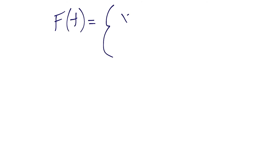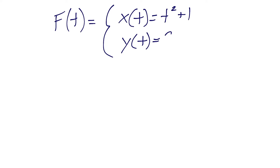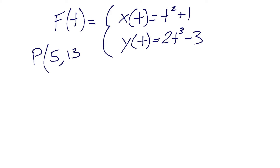For our second example, we have the parametric curve f of t where x of t equals t squared plus 1, and y of t equals 2t cubed minus 3. We'll define a point P where we want to find the slope of the tangent line, and this time it will be at the point (5, 13) — changing things up from the origin.